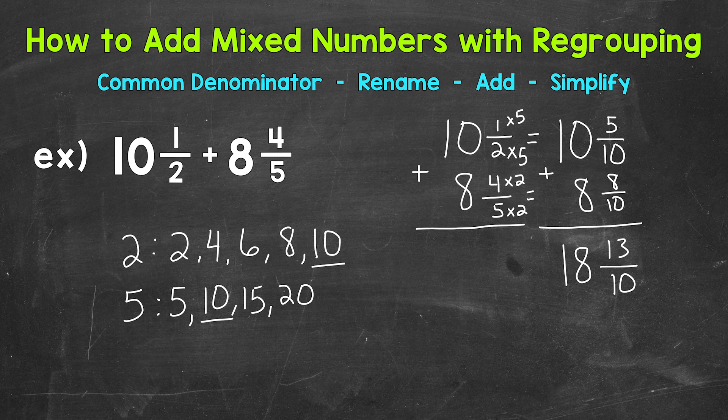But 13 tenths is an improper fraction. So that's greater than a whole. So we want to regroup or take out that whole and give it to the 18, so to speak. We're going to regroup it with the whole number. So let's convert that improper fraction, 13 tenths, to a mixed number. So how many whole groups of 10 out of 13? Well, one whole group of 10 out of 13.